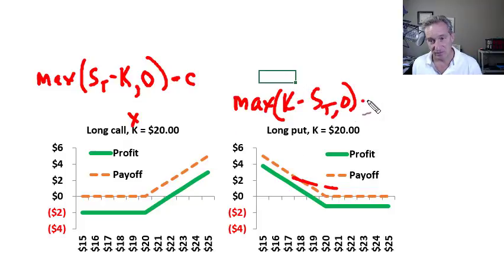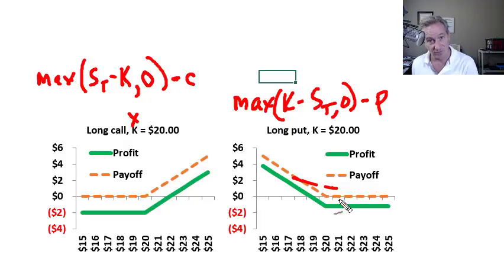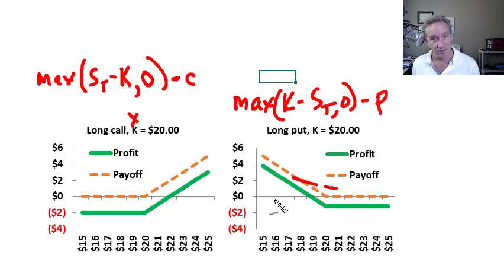That's the payoff. We subtract the cost — the initial cost, the premium of the option — denoted small p to indicate a European put. That gives us the profit diagram in green for the long put. The long put gives us a net loss in any situation where the future stock price is greater than our exercise price, but we get a gain for anything less than that — that is what the put is designed to do, making it ideal for insurance. But our gain is theoretically capped since there is a lower limit on the future stock price.